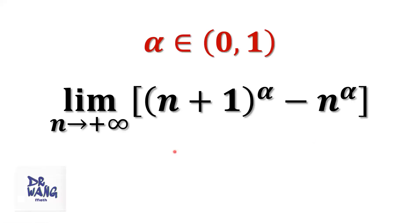Hello everyone, I'm Dr. Wen. Here I ask the question: if alpha is bigger than zero and less than one, what is the limit of (n plus one) to the power of alpha minus n to the power of alpha, as n goes to positive infinity?